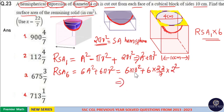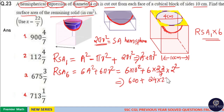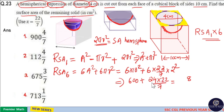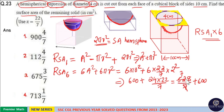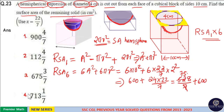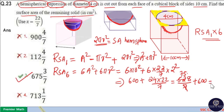This equals 6 into 100, which is 600, plus 6 into 4 is 24, multiplied by 22/7, which gives 528/7. So the total is 600 plus 528/7, which equals 528 divided by 7. 7 goes 75 times into 528, giving 75 remainder 3. So the answer is 600 + 75 and 3/7, which equals 675 and 3/7. You can see there is 675 3/7 in option 3, so option 3 is your answer.